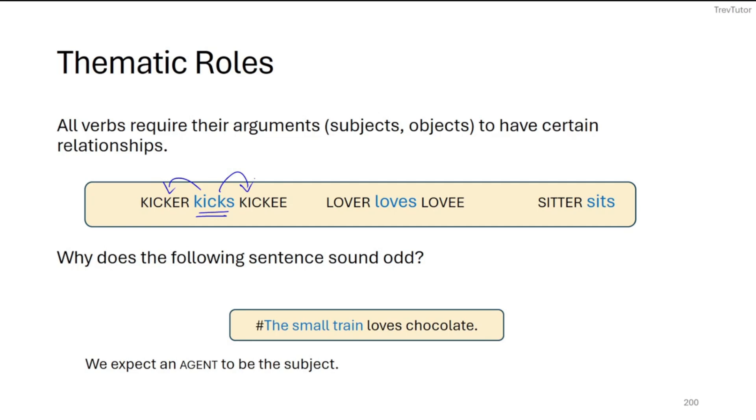For example, kickers have to be agents—they have to be things that can actually kick. And kickees just need to be things that can be kicked. In the case of loves, you need a lover and a lovee. And for a sitter, well, if you have sits, you're going to need a sitter. So we can ask ourselves, why does this sentence sound odd? The small train loves chocolate.